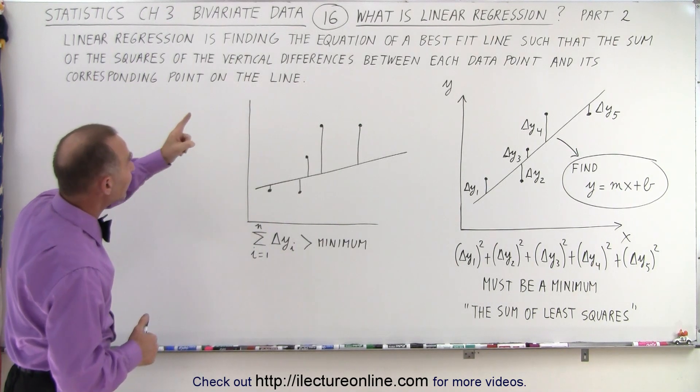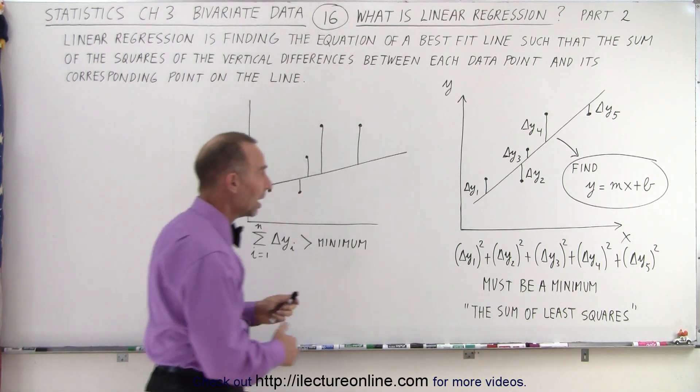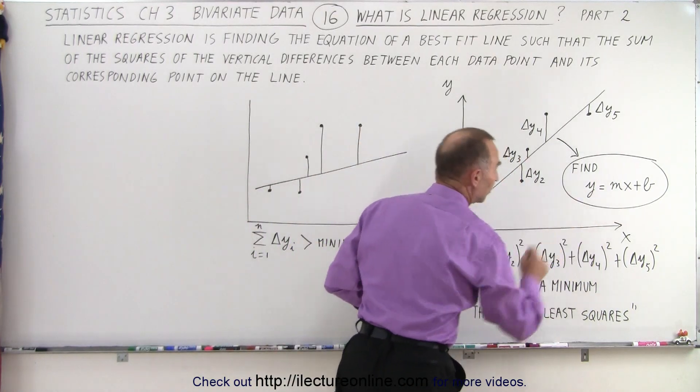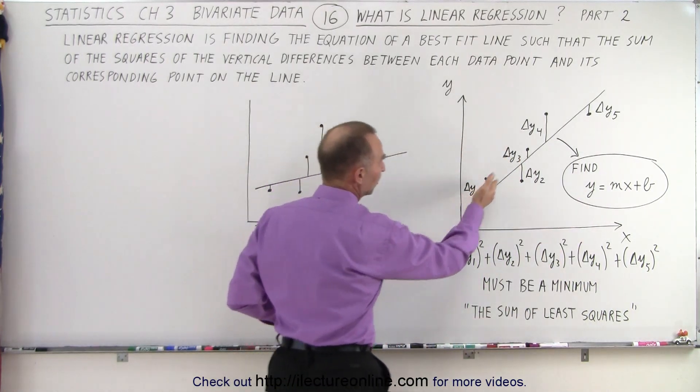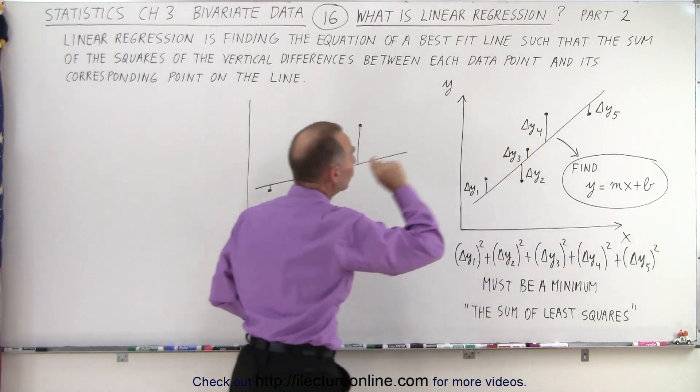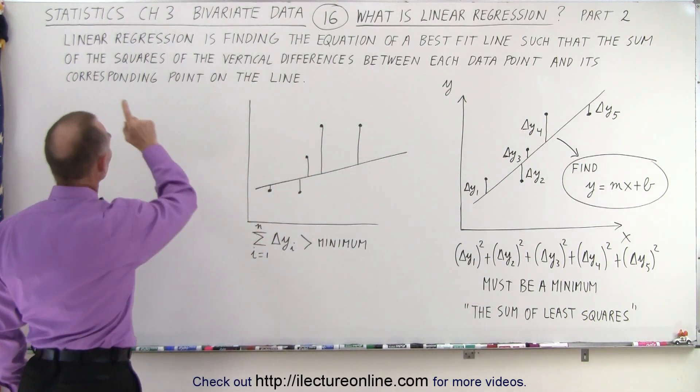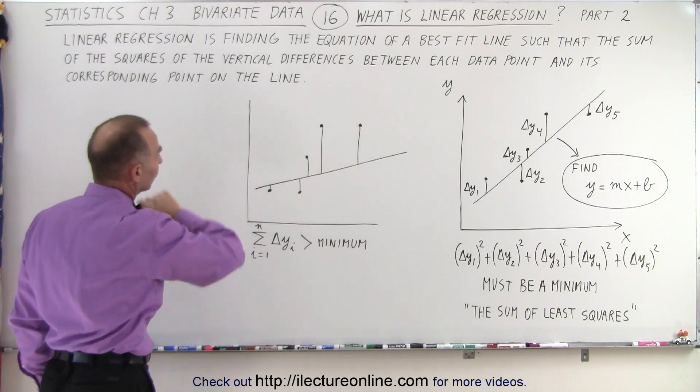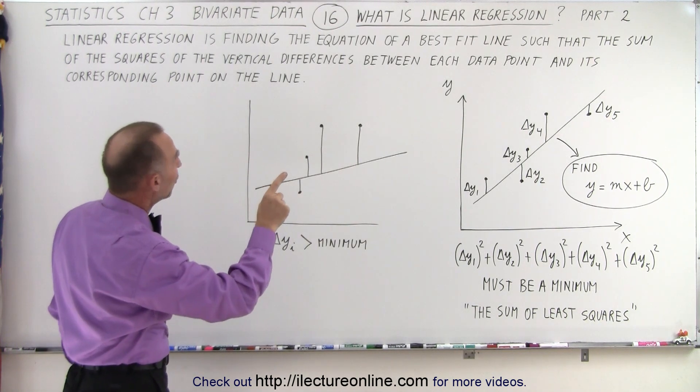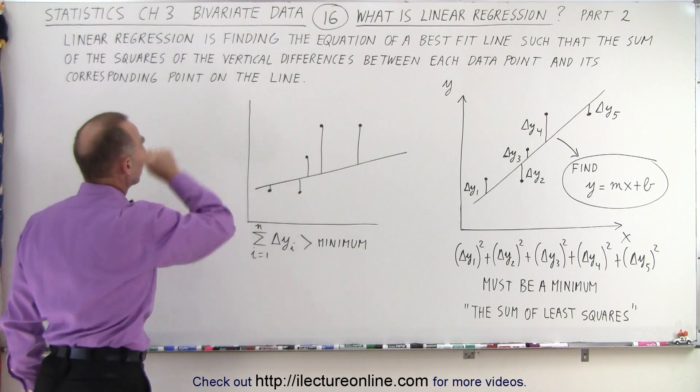Linear regression is finding the equation of a best fit line, find y equals mx plus b, and here this represents the best fit line, such that, and this is the key to understanding what this means, the sum of the squares of the vertical differences between each data point and its corresponding point on the line.